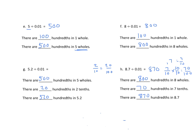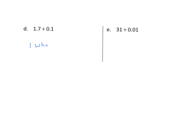Let's go on to the next page where we'll work some of these without all the words. We have one and seven-tenths divided by one-tenth. How many one-tenths are there in one and seven-tenths? One whole equals ten tenths, and seven-tenths equals seven tenths, giving seventeen tenths. So one and seven-tenths divided by one-tenth equals seventeen.